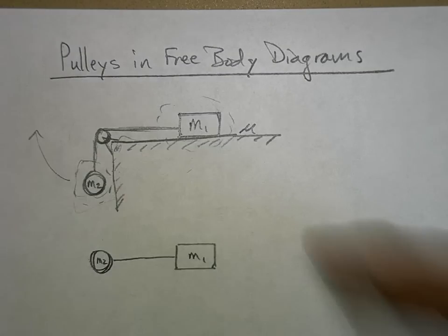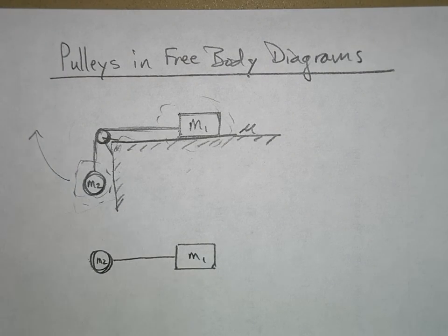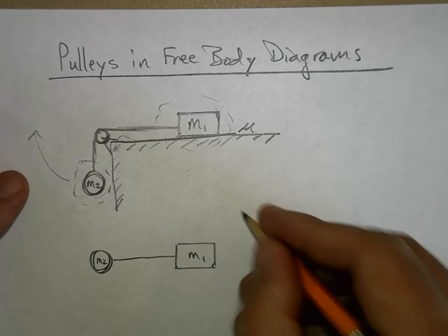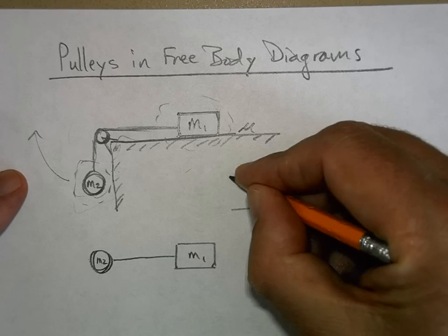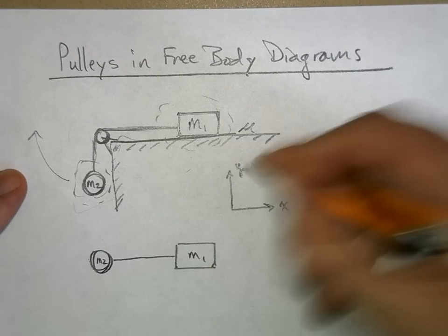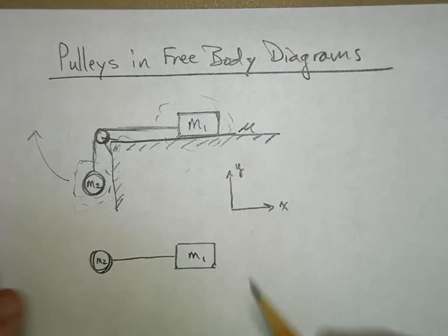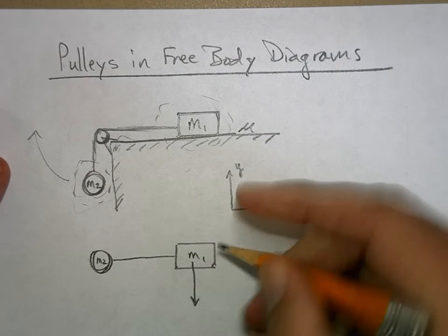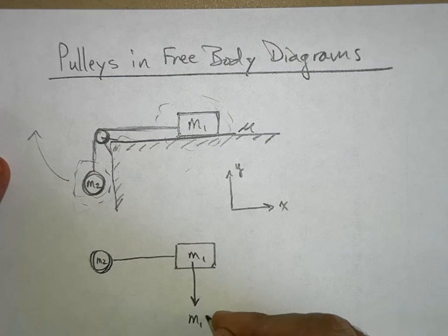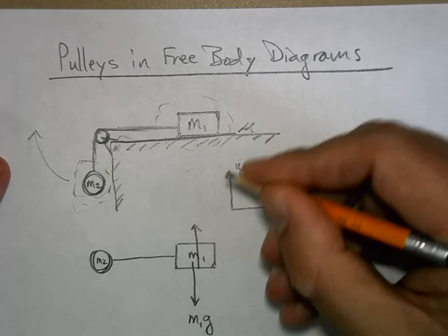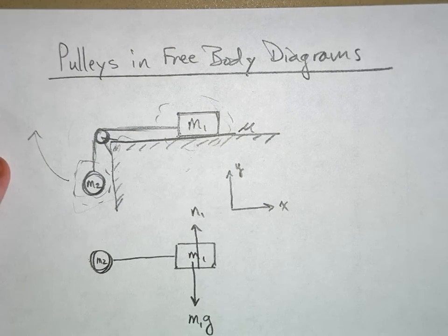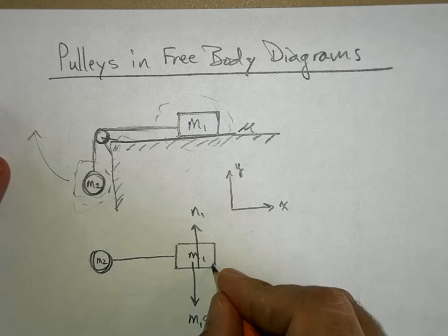So here's m2, here's m1, and this is now my free body. This whole thing together is my free body. Now let's draw the forces acting on my free body. I need a direction x and y axis system. Let's take a look at m1. m1 has a force of gravity m1 times g. It has a normal force, we'll call that n1, and it has a friction force.